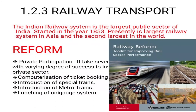Next, we move on to railway transport. The Indian railway system is the largest public sector undertaking in India. It started in the year 1853 and is presently the largest railway system in Asia and the second largest in the world. Reforms include: private participation with several steps taken to involve the private sector, compartmentalization of ticket booking, introduction of special trains, introduction of metro rails, and launching of the Uni-gauge system.